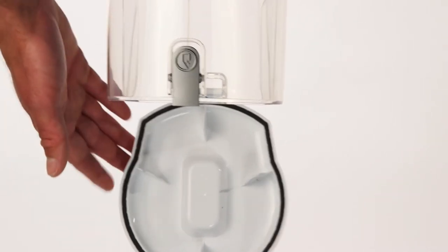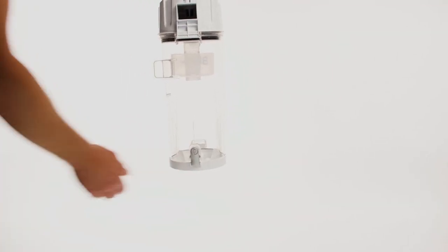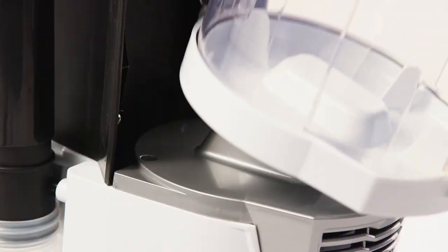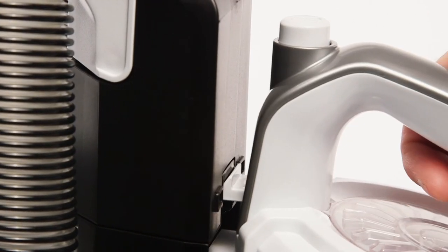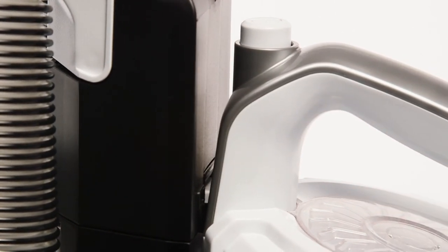Push the lid back into position until it clicks. Finally, slot the dust container back on the vacuum body. The dust container will click when correctly in position. Your vacuum is now ready to use.